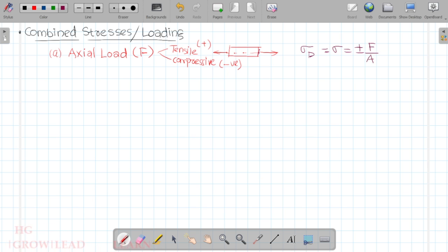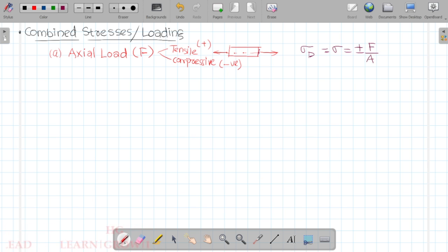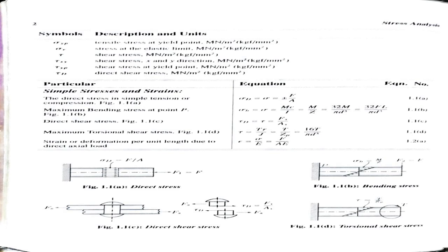For a square with side a, A = a². This is Equation 1.1a, page number 2 — direct stress in simple tension or compression. The axial tension gives elongation and the axial compression gives shortening. The equation is sigma = ±F/A.